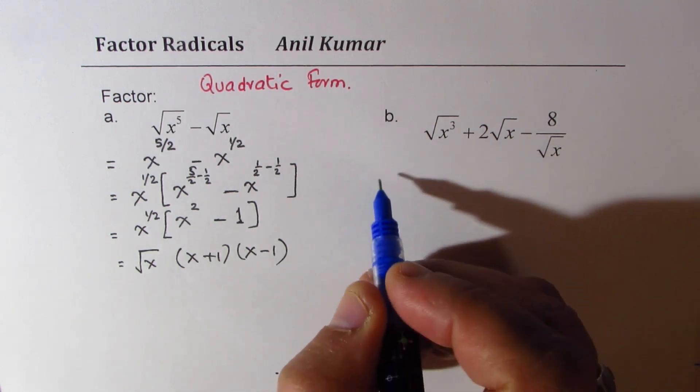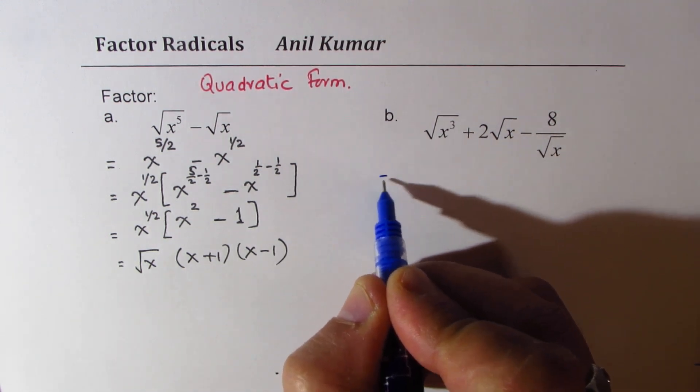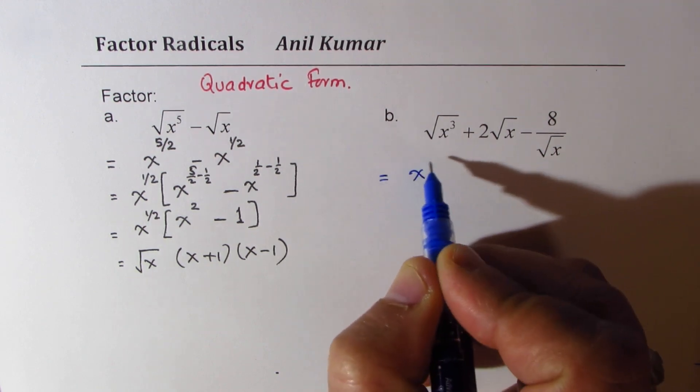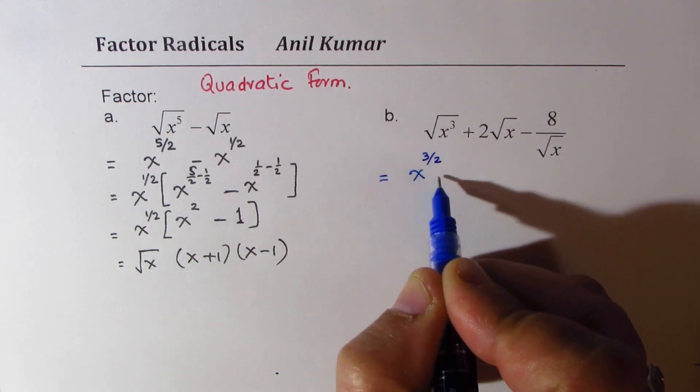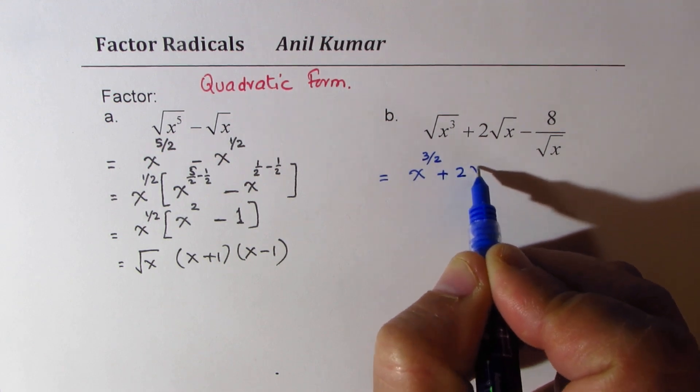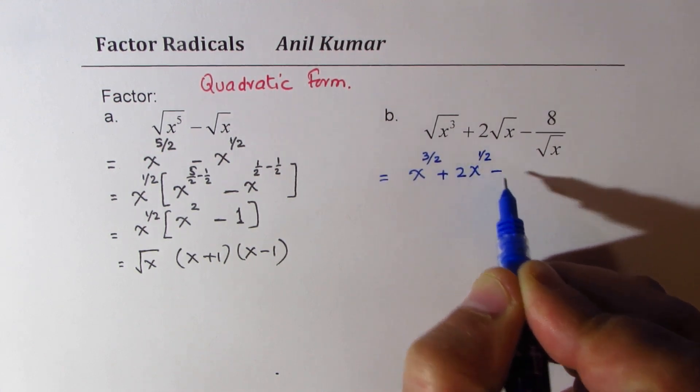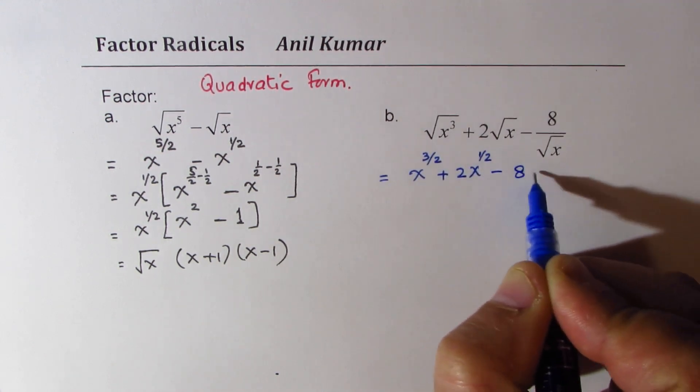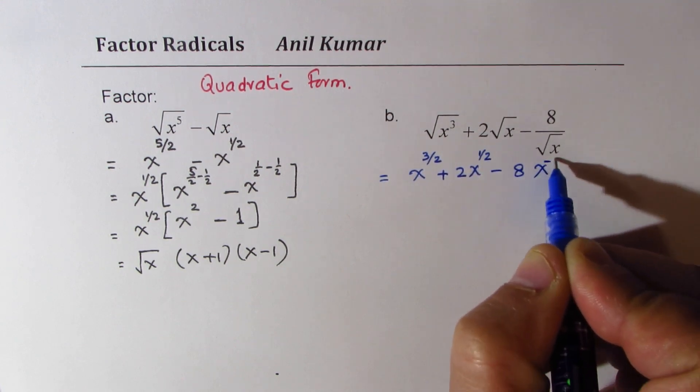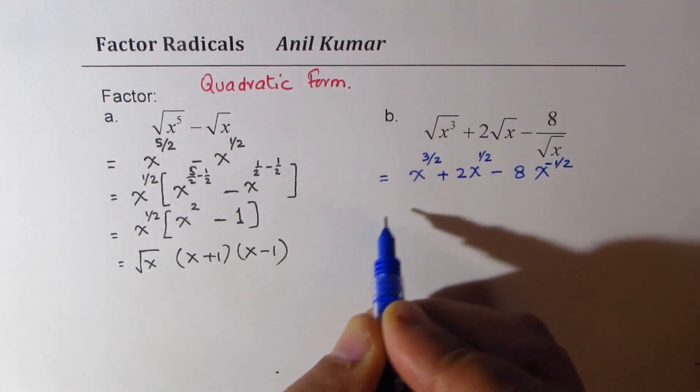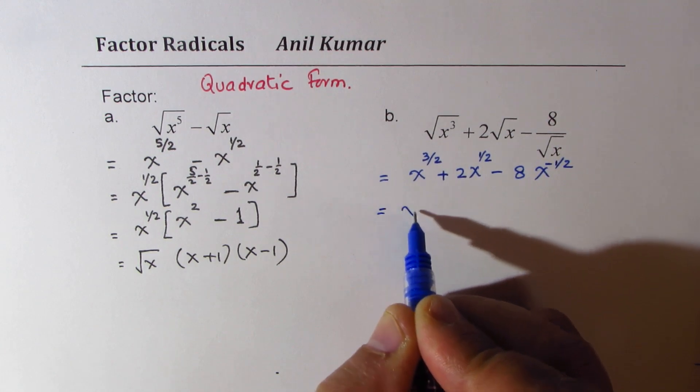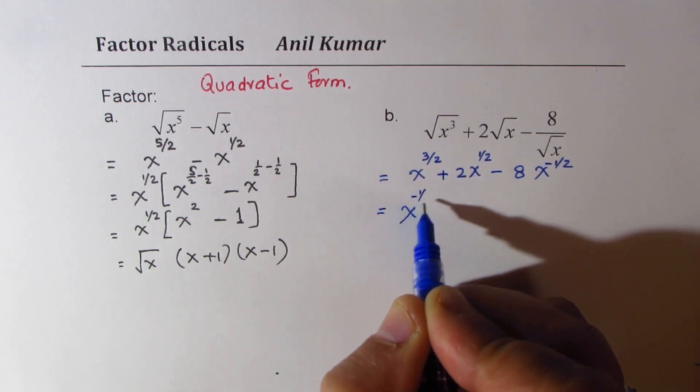But let's write them in the exponent form first. So we get x to the power of 3 over 2, plus 2 times x to the power of half, minus 8 times x to the power of minus half, since this was in the denominator.